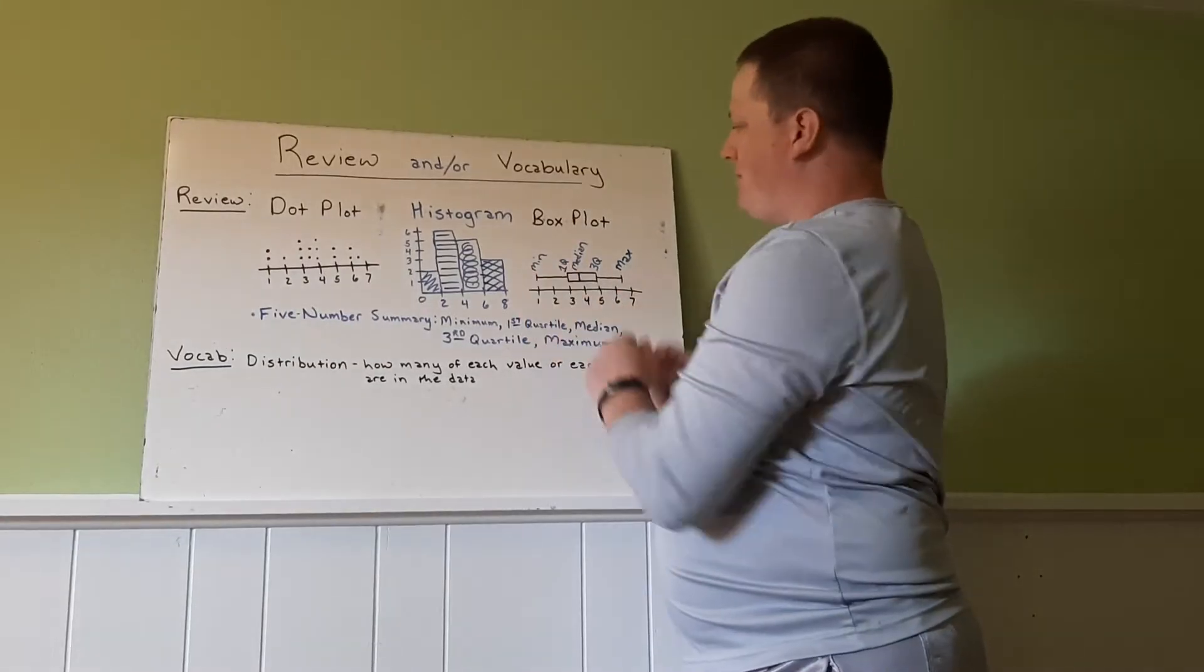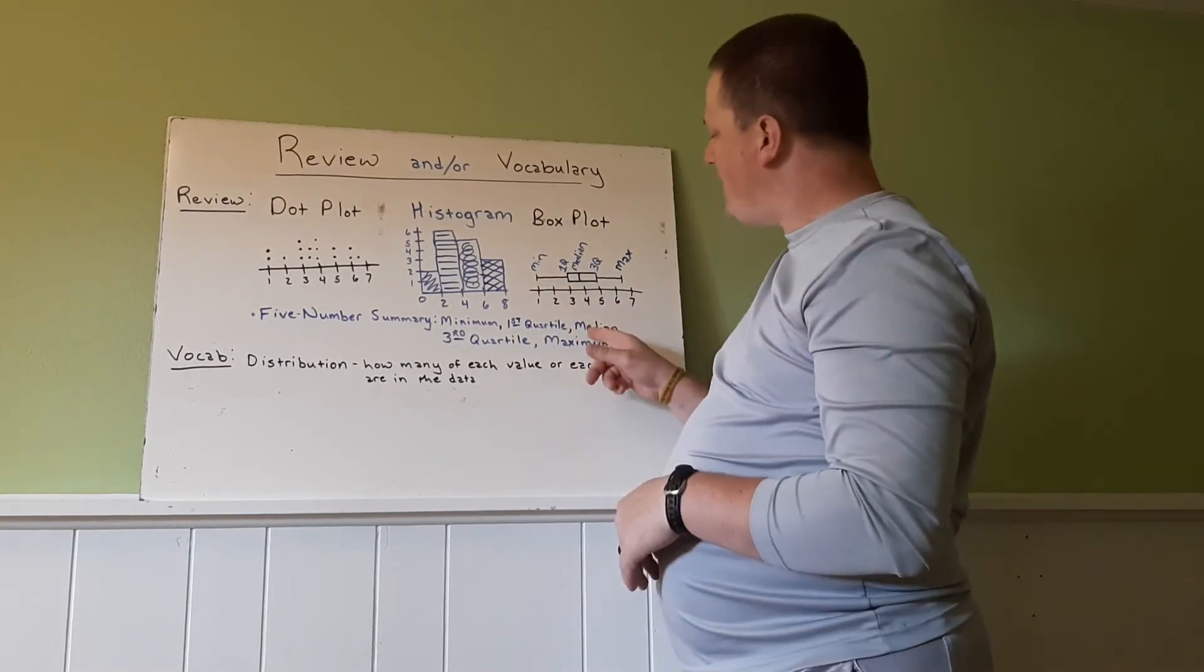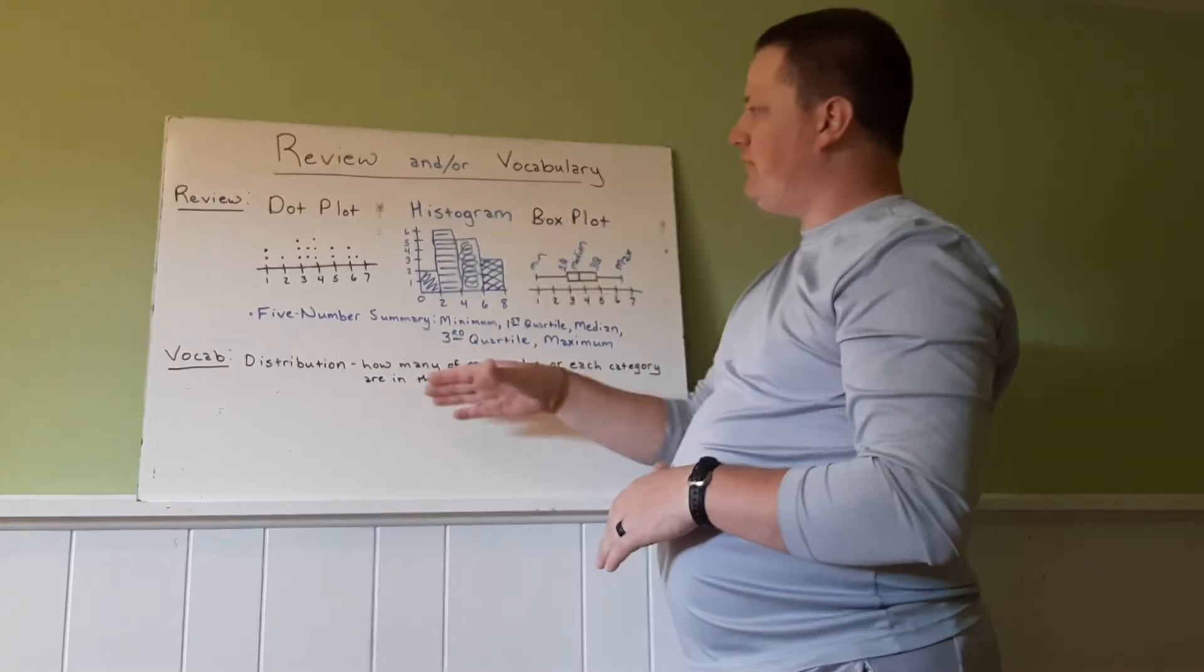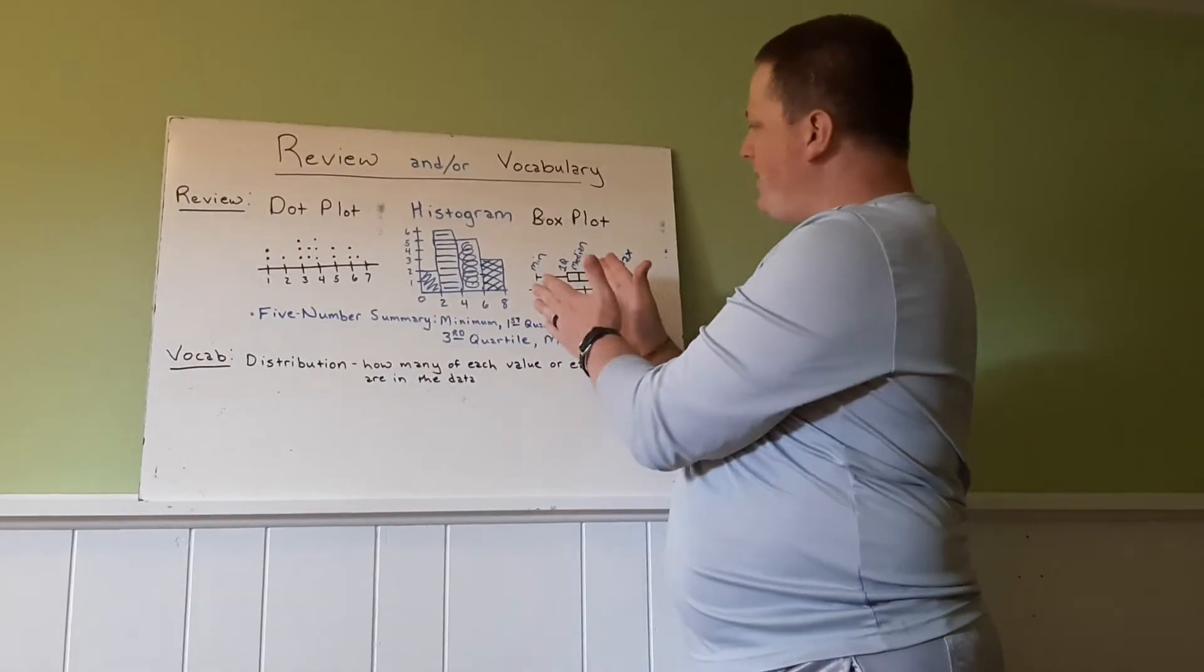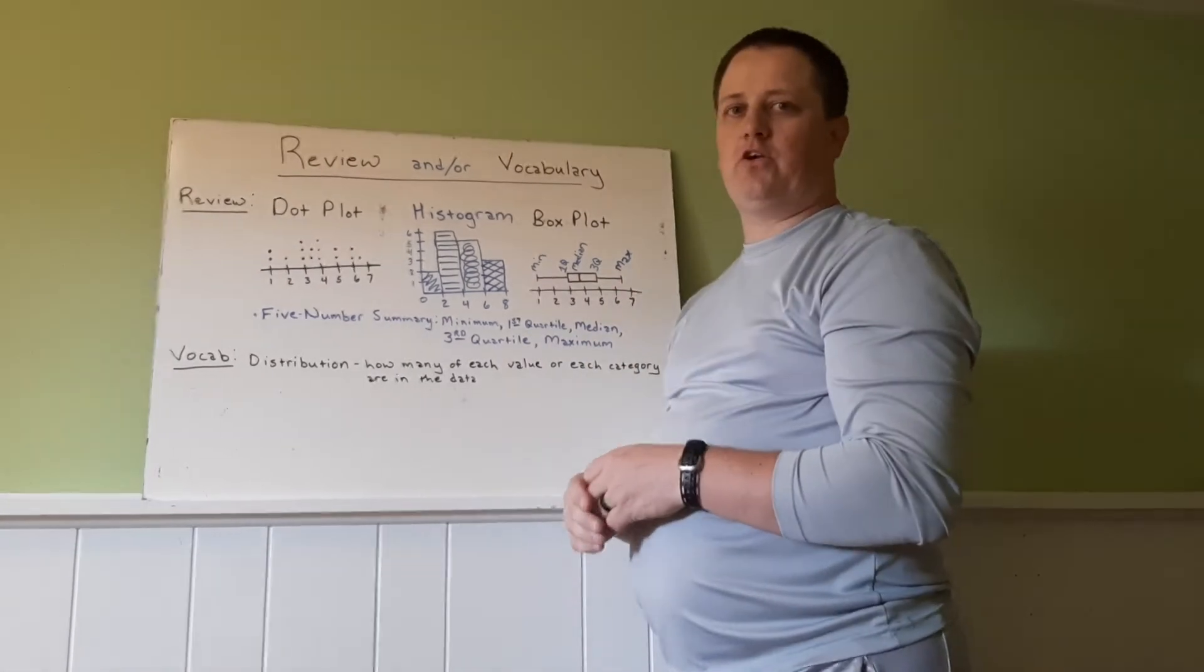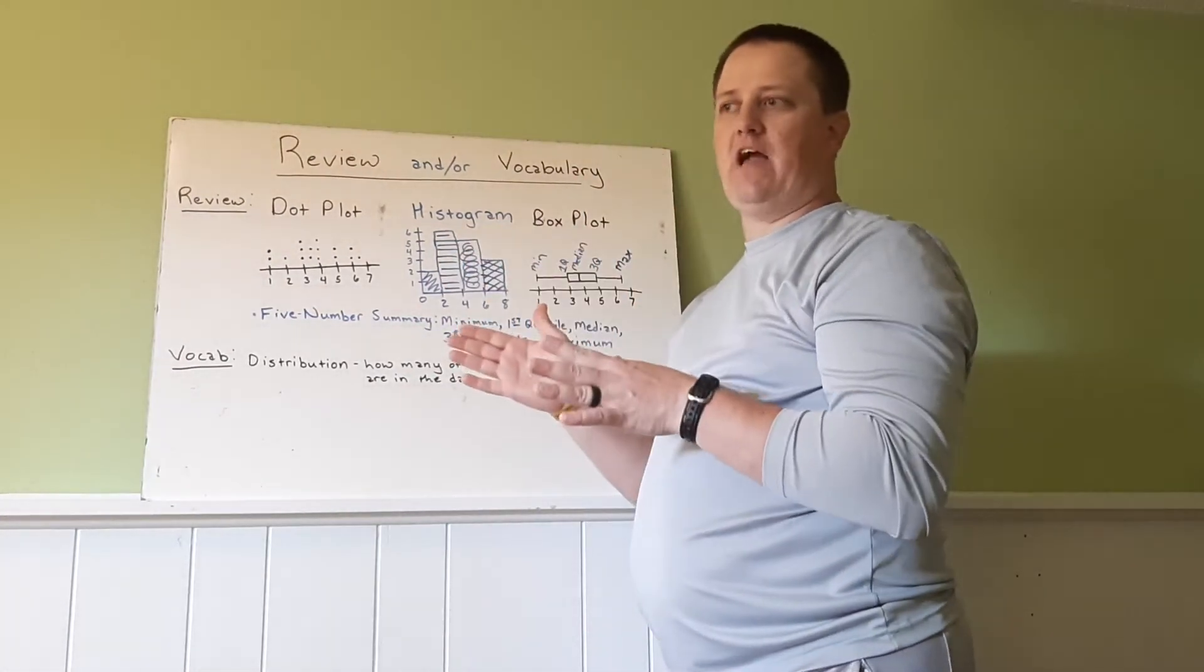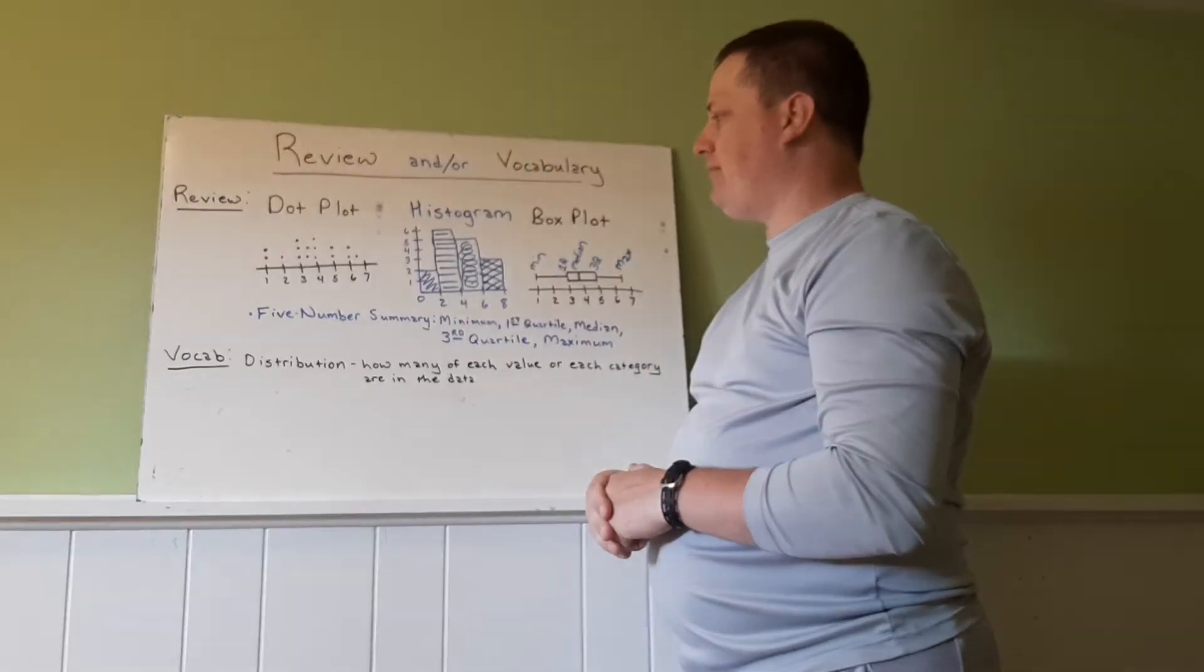So the min and the max or minimum and maximum are the easy ones here. The median is the middle. So the middle of this data is where the median goes. Then if you split the data into two halves, the first quartile and third quartile are the middles of each half. We'll dig deeper into that and remind ourselves where that comes from.